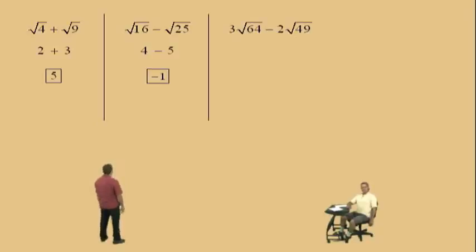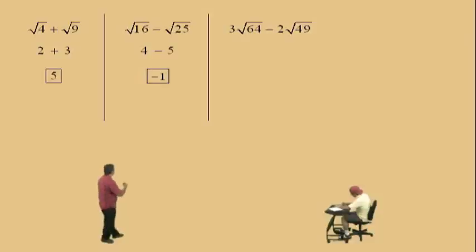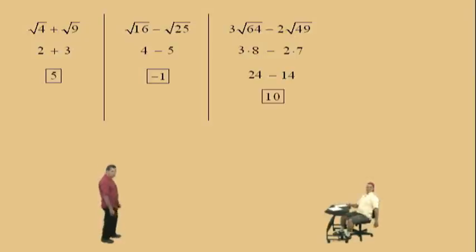Let's do another one, Charlie. Don't get scared. 3 square roots of 64 means 3 times the square root of 64. 2 square roots of 49 means 2 times the square root of 49. So we have 3 times — what's the square root of 64? 8. Subtract 2 times the square root of 49, which is 7. And 3 times 8 is 24. 2 times 7 is 14. And 24 subtract 14 is 10. Very nice there, Charlie.